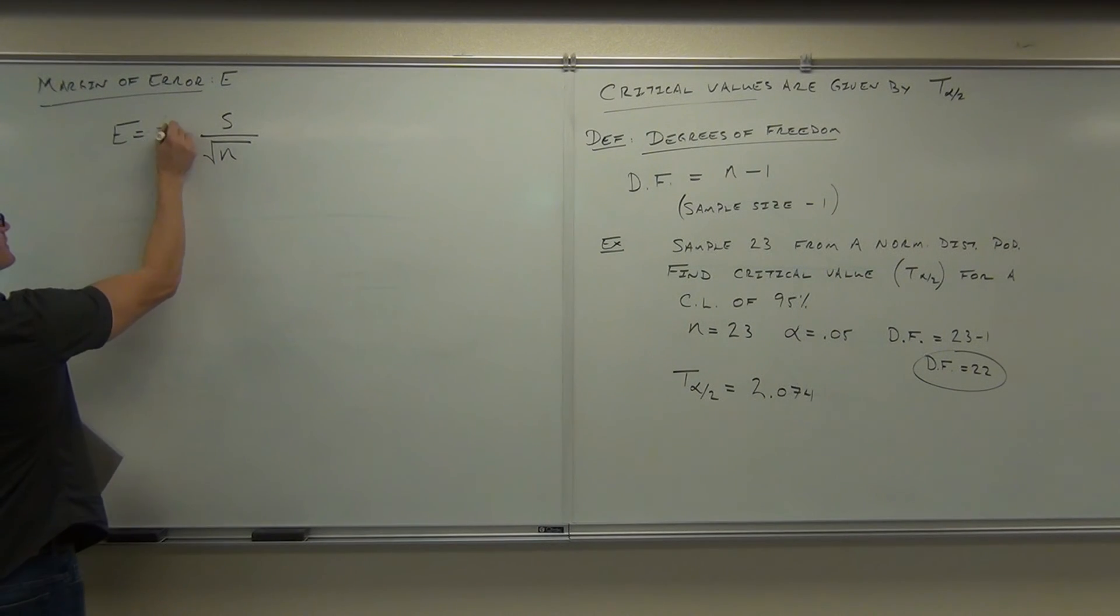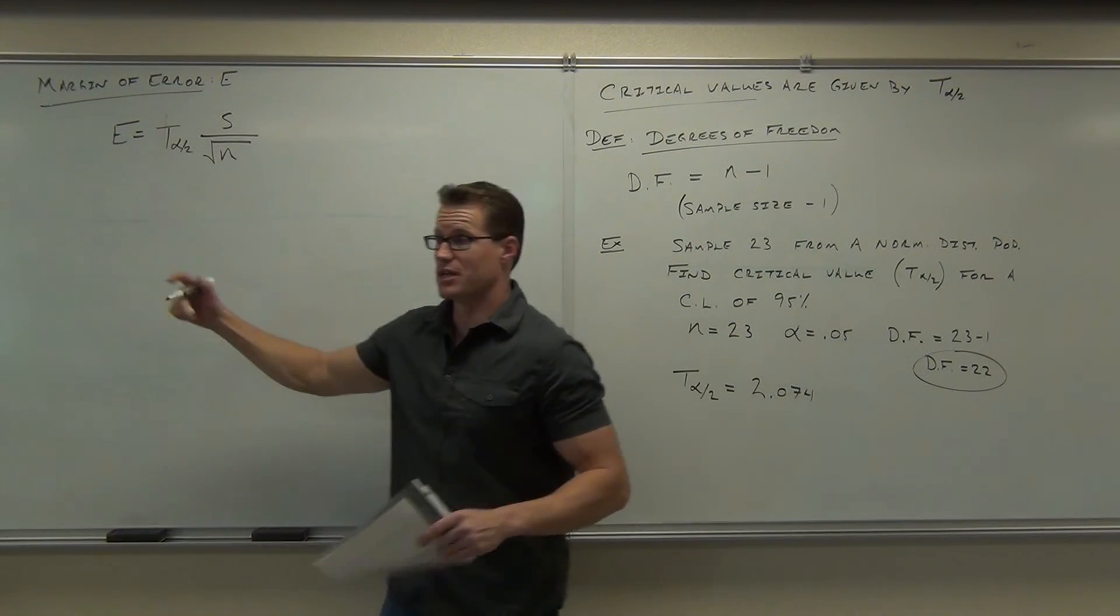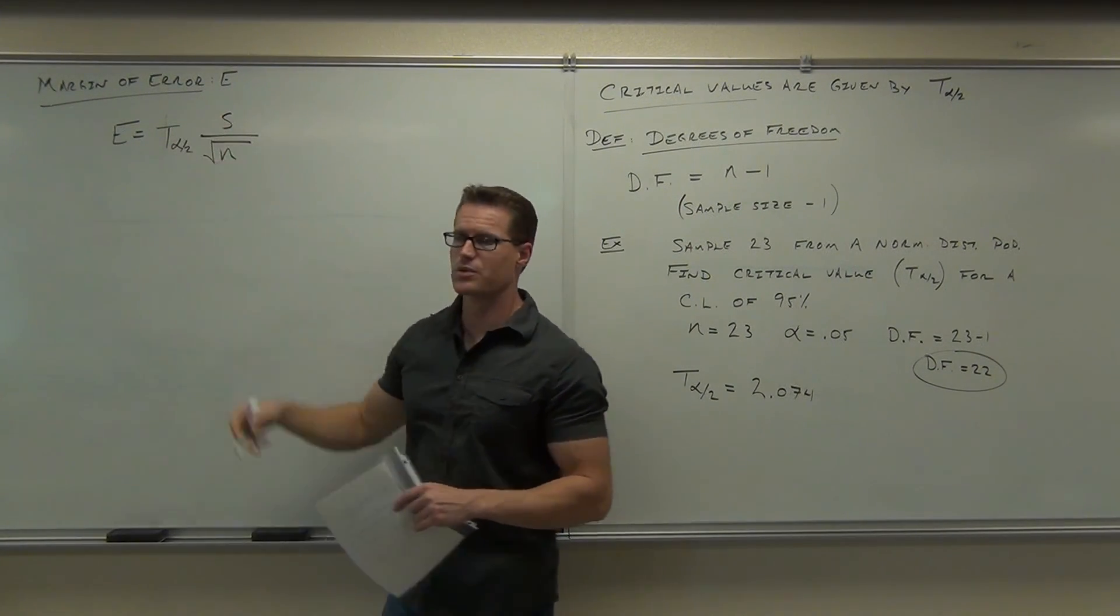Now the critical value, can I use a t critical value or a z critical value? Which one? T. Why? I don't know sigma. That's why we have s there, right? If we knew sigma, we'd have a z. Z and sigma go together. T and s go together.